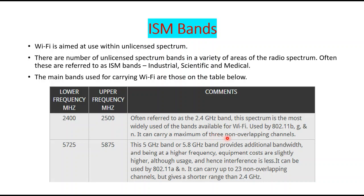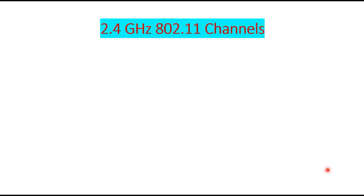In the 2.4 GHz band there are three non-overlapping channels, which we will discuss in upcoming slides. Coming to the 5 GHz band, the lower frequency range is 5725 MHz and the upper one is 5875 MHz. In this band, 802.11a, n, and the latest ac standards are all working. There are also some non-overlapping channels here which we'll discuss.